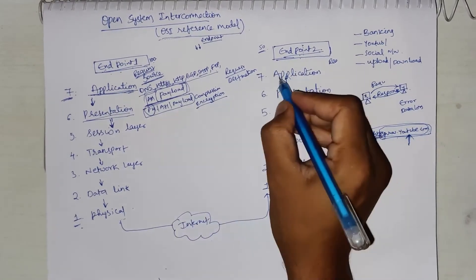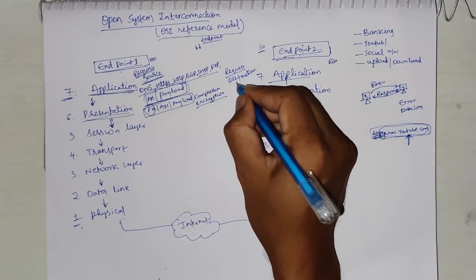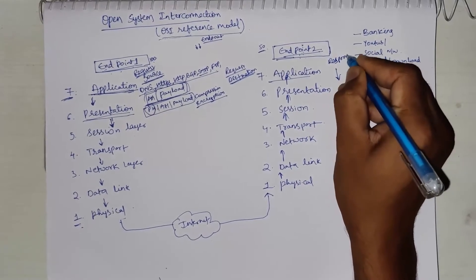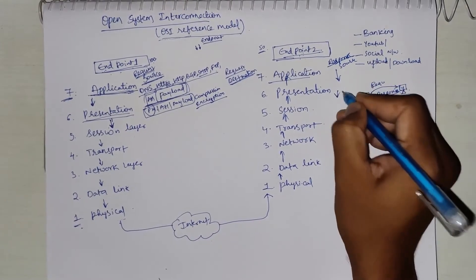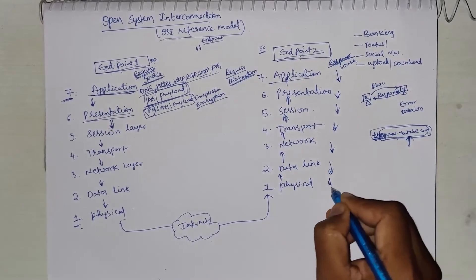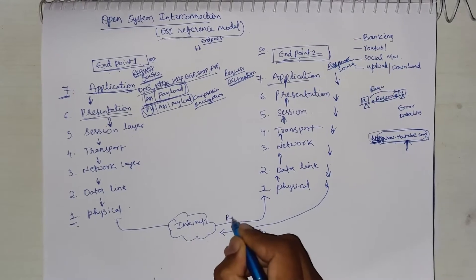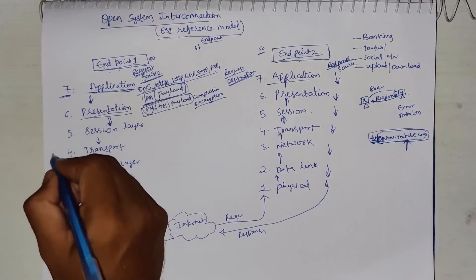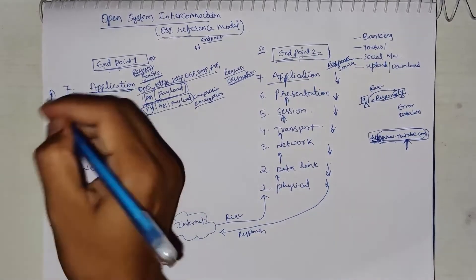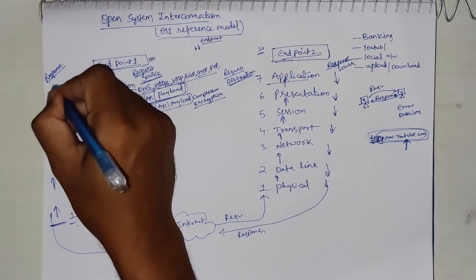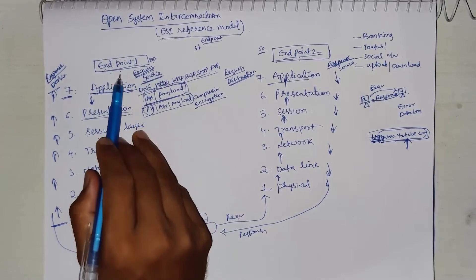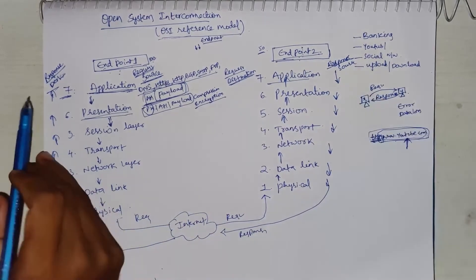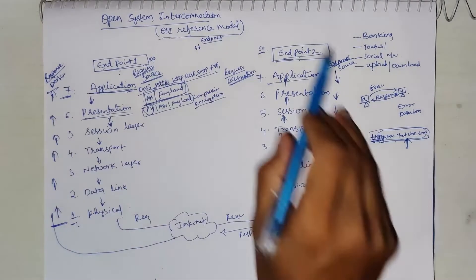The entry point of the request is the application layer, and the exit point on the source side is the physical layer. On the destination side, data arrives at the physical layer and flows up: data link layer, network layer, transport layer, session layer, presentation layer, and finally application layer. The destination for the request is the application layer of Endpoint 2. For the response, Endpoint 2 becomes the source and the response travels down through all layers, across the internet, and up through all layers at Endpoint 1. Request source is Endpoint 1, request destination is Endpoint 2. Response source is Endpoint 2, response destination is Endpoint 1 — this whole cycle is called communication.